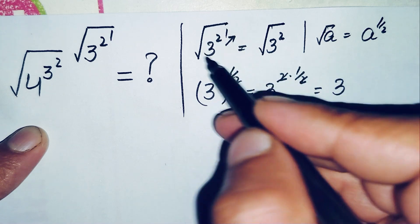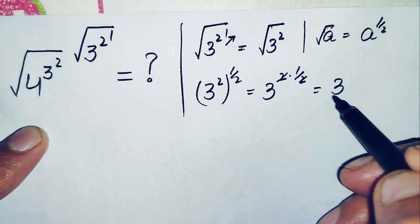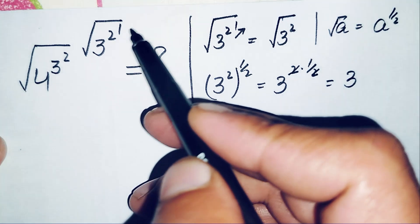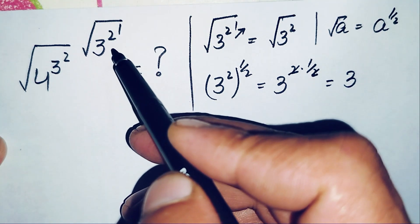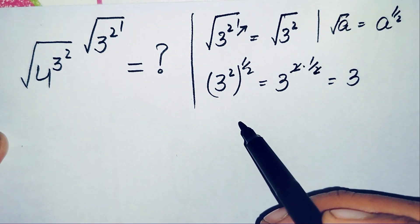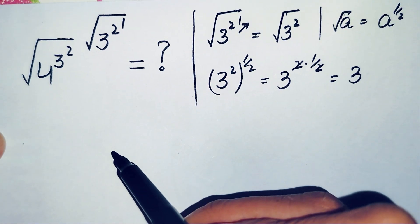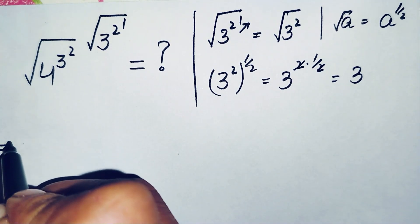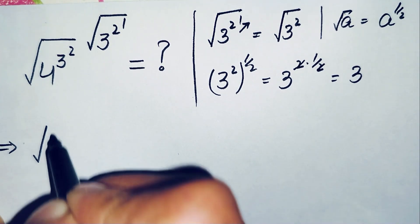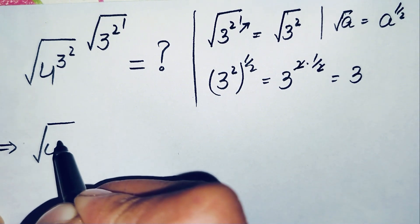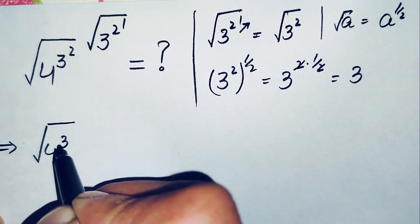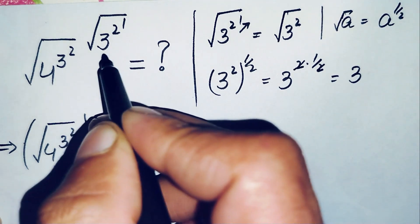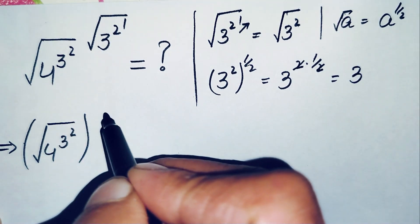Here we cancel, giving 3 raised to power 1, which is simply 3. So the value of this square root expression is only 3. We replace the whole power — the square root of 3 raised to power 2, raised to power 1 — with only 3. This gives us: the square root of 4 raised to power 3, raised to power 2, raised to power 3.